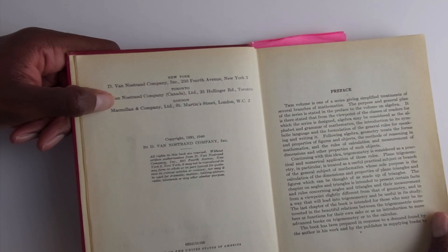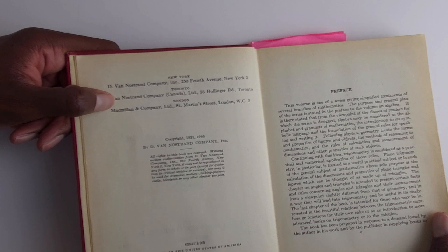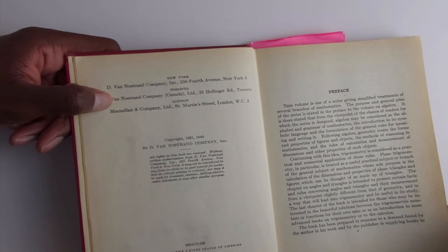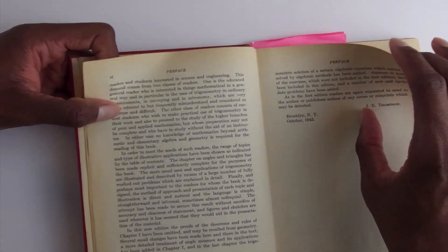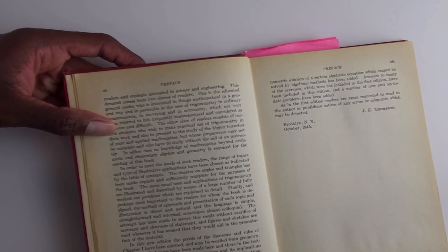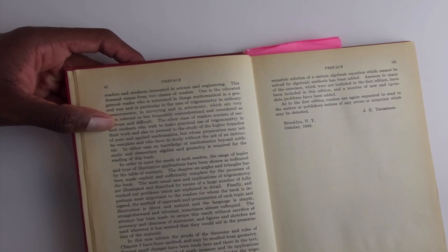The purpose and general plan of the series is stated in the preface of the volume on algebra. It is there stated that from the viewpoint of the classes or readers for which the series is designed, algebra may be considered as an alphabet and grammar of mathematics. So this is just kind of the preface here and as you can see I already got some sections noted here that I like to go over.